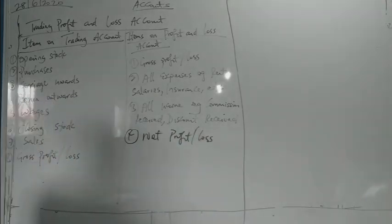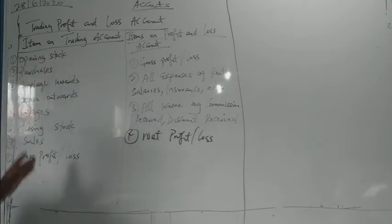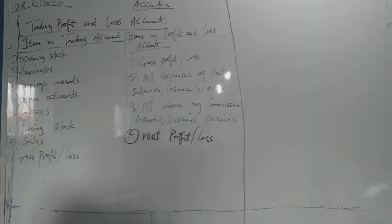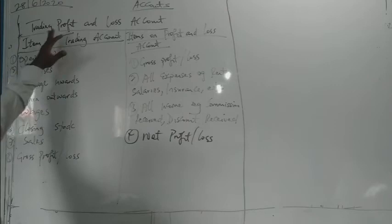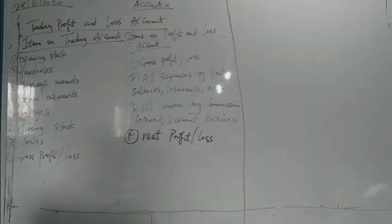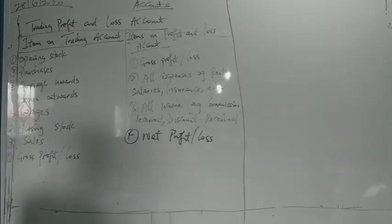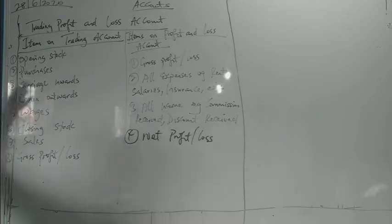Bottom line is usually net profit, but on the trading side it is gross profit or gross loss. There are some items you see on the trading account and some items you see on the profit and loss account. The two of them joined together is known as trading profit and loss account, or statement of profit or loss and other comprehensive income according to the latest accounting standard.